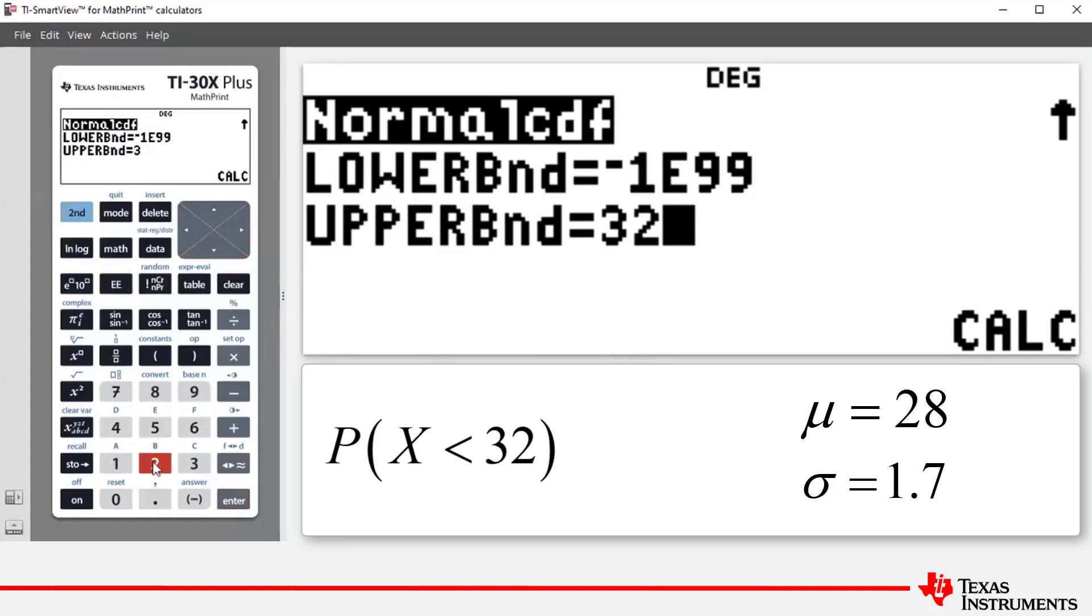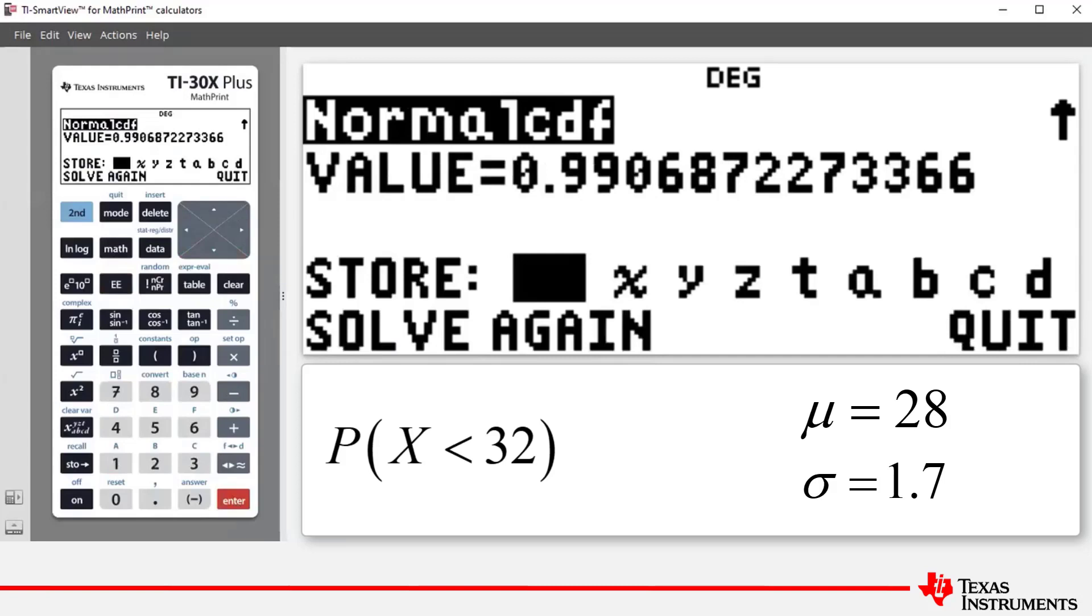We then press enter to highlight calc, short for calculate. Press enter again, and so correct to four decimal places, the probability that random variable X is less than 32 is equal to 0.9907.